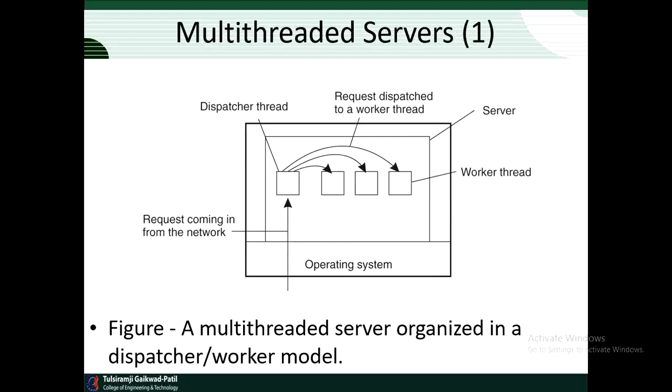Now we will see multi-threaded servers. To establish a high degree of distribution transparency, distributed systems that operate in wide area networks may need to conceal long inter-process message propagation times. The round trip delay in wide area networks can easily be in the order of hundreds of milliseconds or sometimes even seconds. The usual way to hide communication latencies is to initiate communication and immediately proceed with something else. A typical example where this happens is in web browsers.